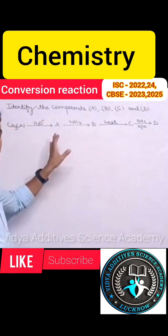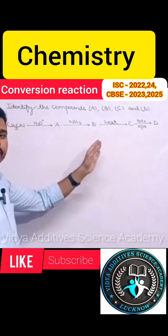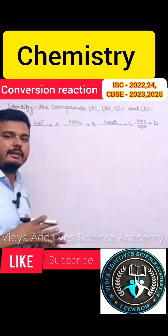Here in this equation we have only reactant and some reagents. On the basis of these reagents we have to identify A, B, C and D.